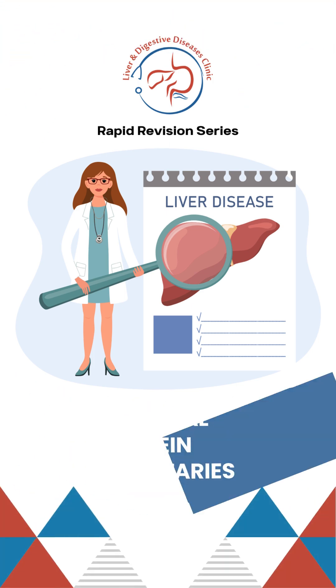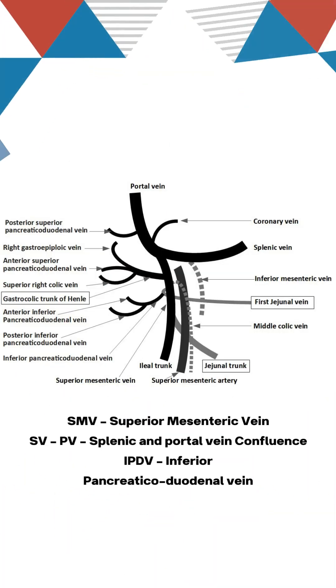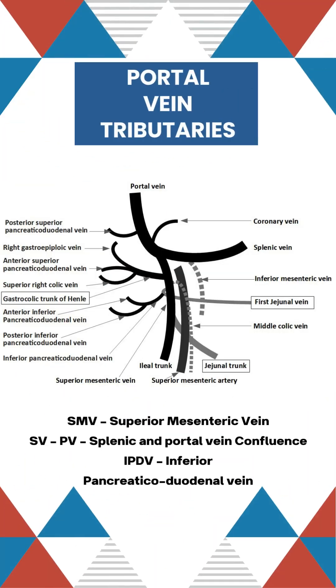The superior mesenteric vein (SMV) is formed by a union of an ileal trunk and a jejunal trunk. The SMV and splenic vein join to form the portal vein behind the neck of the pancreas.